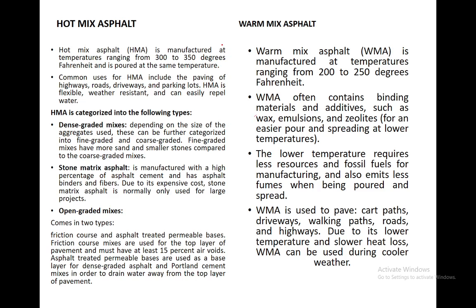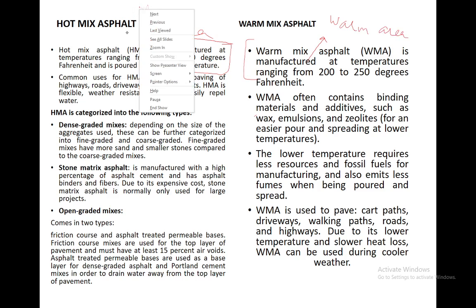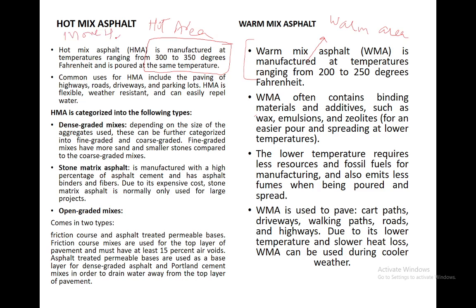There is an important difference between hot mix asphalt and warm mix asphalt. Hot mix asphalt is used in areas where the temperature varies from 300 to 350 degrees Fahrenheit, and it is constructed from fine sand with coarse material. Hot mix asphalt can be categorized as dense graded, where the aggregate size is uniformly dense, or as stone matrix asphalt, also constructed with coarse graded material.